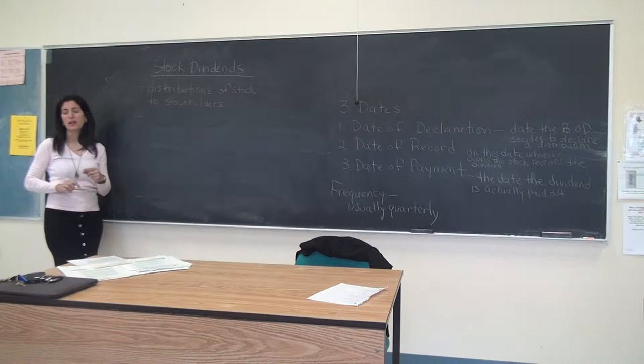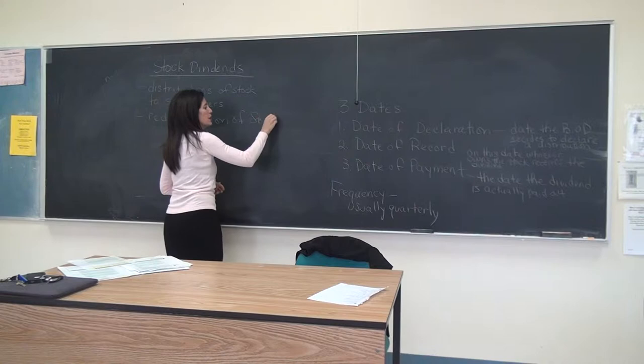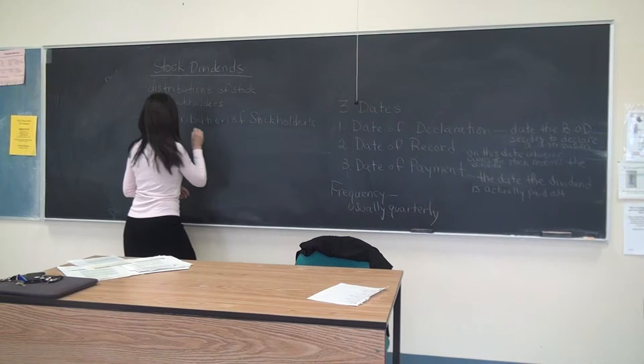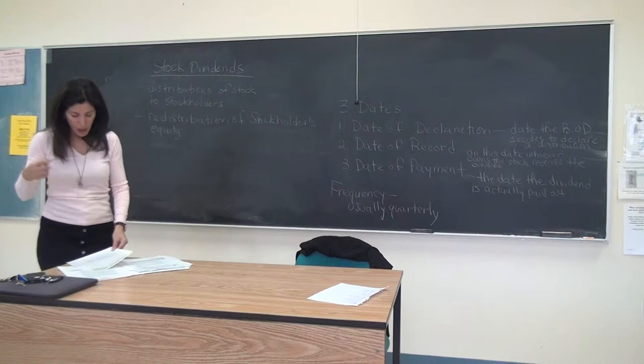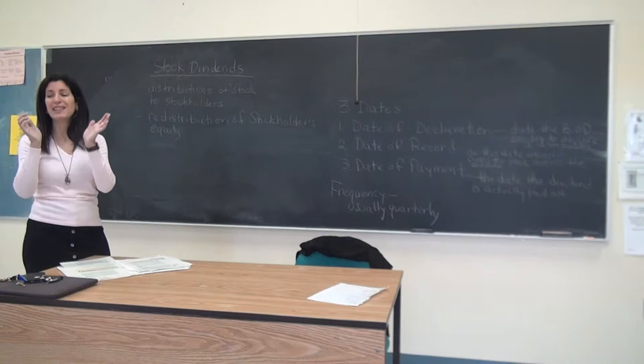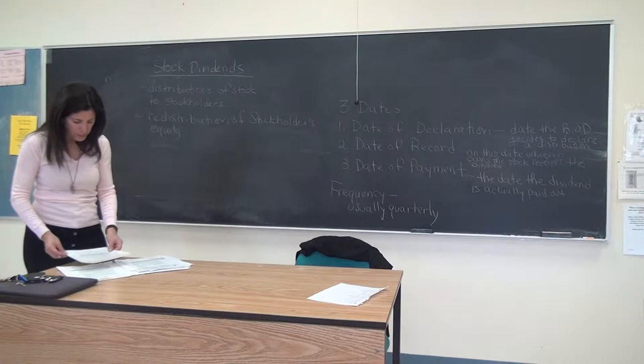So it's a distribution of stock to stockholders. What we consider this to be in accounting is a redistribution of stockholders' equity. So what I'm going to do is move values around in the stockholders' equity section. The total stockholders' equity is going to be exactly the same — I'm just going to move things between categories.